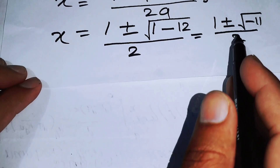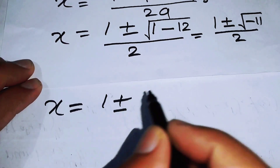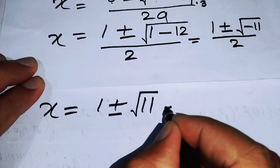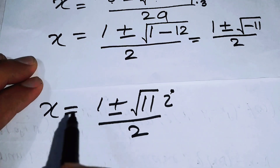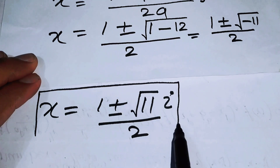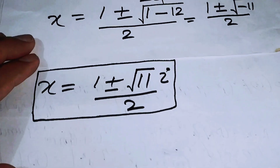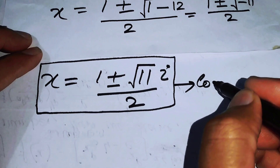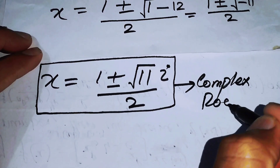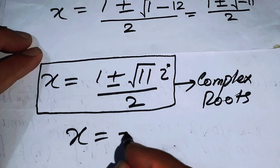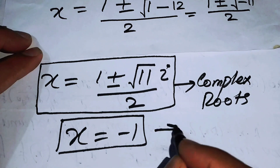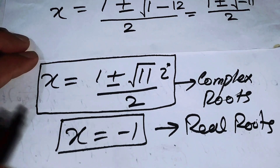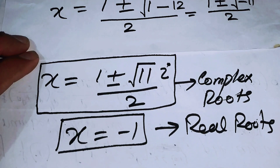These are the two other roots of the given equation. We write: x equals 1 plus or minus the square root of minus 11, and since the square root of minus 11 equals i times the square root of 11, these are two complex roots. Hence the three roots of the given equation are one real root x equals minus 1, and two complex non-real roots. Thank you so much for watching this video — please subscribe to my channel for more exciting videos.